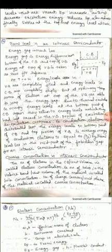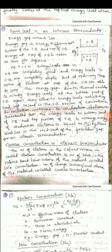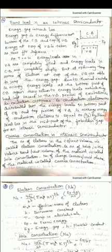Next, we will learn about the Fermi level in an intrinsic semiconductor. The valence band, conduction band, and energy gap in between are shown. The energy gap is the energy difference between the bottom of the conduction band and the top of the valence band. The energy at the top of the valence band is taken as zero for reference. At T = 0 Kelvin, energy levels in the valence band are completely filled and those in the conduction band are completely empty.